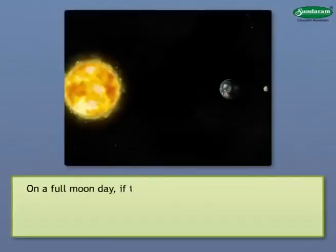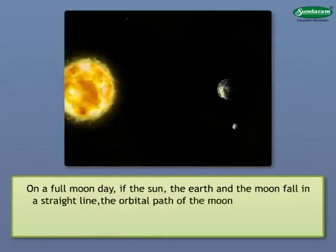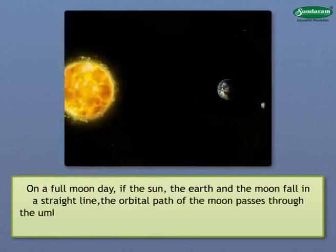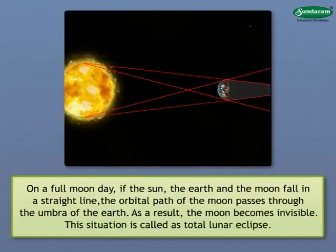On a full Moon day, if the Sun, the Earth and the Moon fall in a straight line, the orbital path of the Moon passes through the umbra of the Earth. As a result, the Moon becomes invisible. This situation is called as total lunar eclipse.